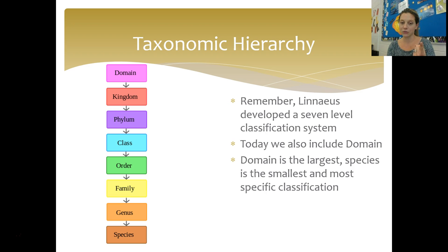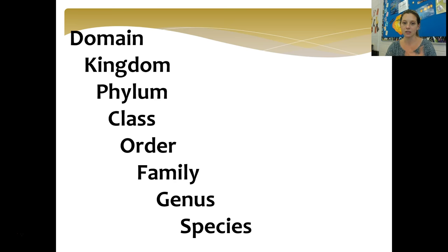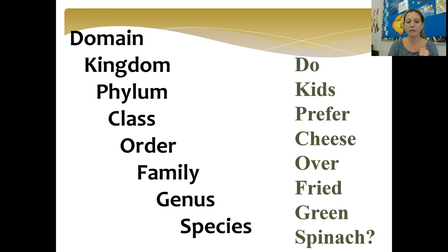The seven levels of taxonomic hierarchy that we use today are: domain, kingdom, phylum, class, order, family, genus, species — with domain being the largest and most inclusive level, and species being the smallest and most specific. You've got to come up with some way to remember this. For example: 'Do Kids Prefer Cheese Over Fried Green Spinach?' or 'Did King Philip Come Over For Great Spaghetti?' Come up with your own acronym — something silly that will help you remember the order.